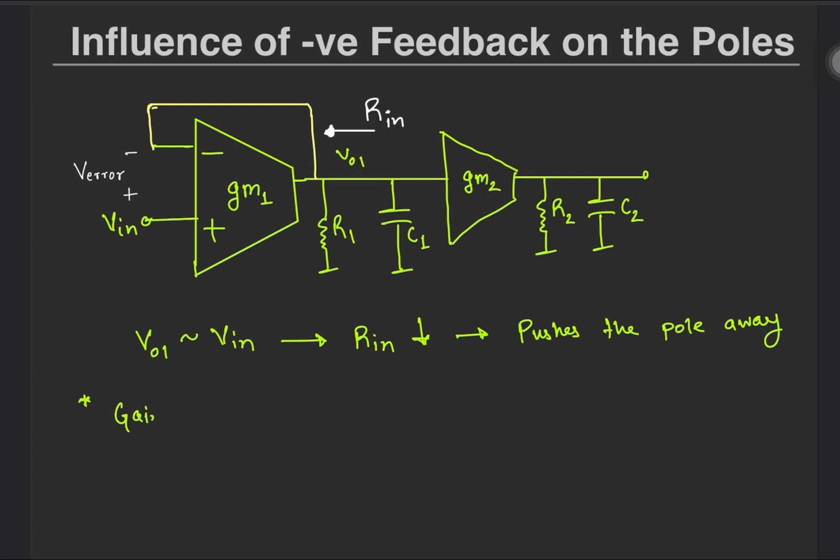Note that this comes at a cost of the gain which has been reduced from GM1 R1 earlier in the case of no feedback to GM1 R1 over 1 plus GM1 R1 with feedback.